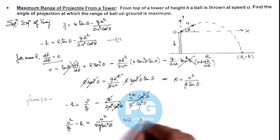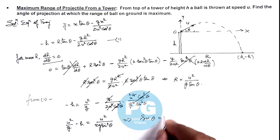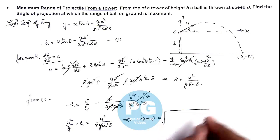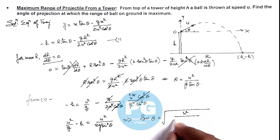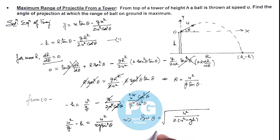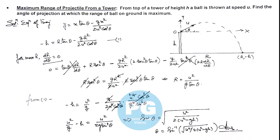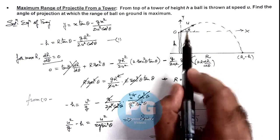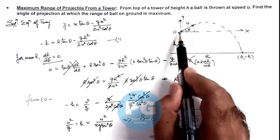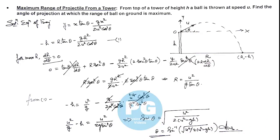Simplifying further, we get sin θ = √(u² / (2u² − gh)), or equivalently, theta equals sin⁻¹ of √(u² / (2u² − gh)). This is the final result: the angle at which the ball must be projected from the top of the tower so that the maximum range on the ground is obtained.